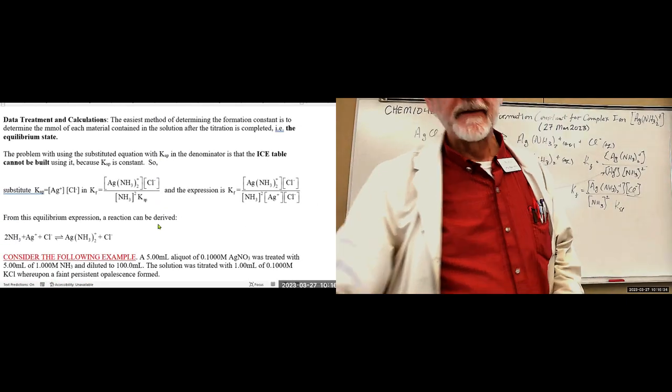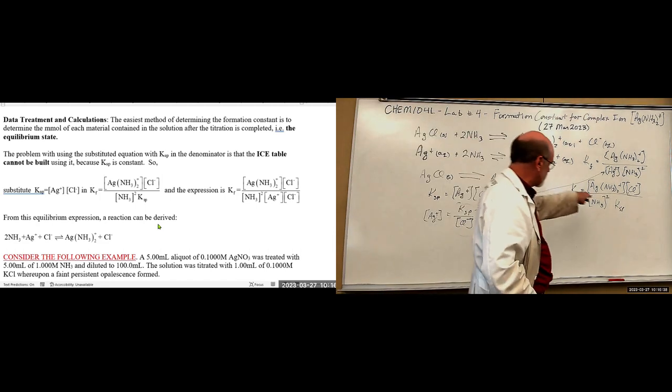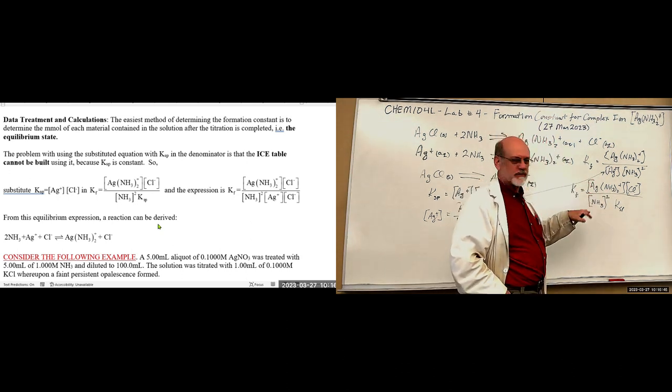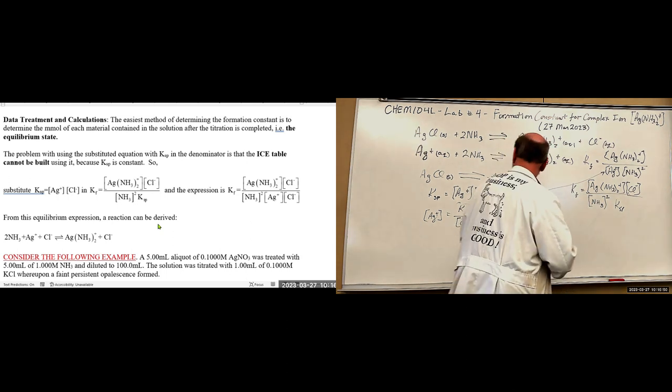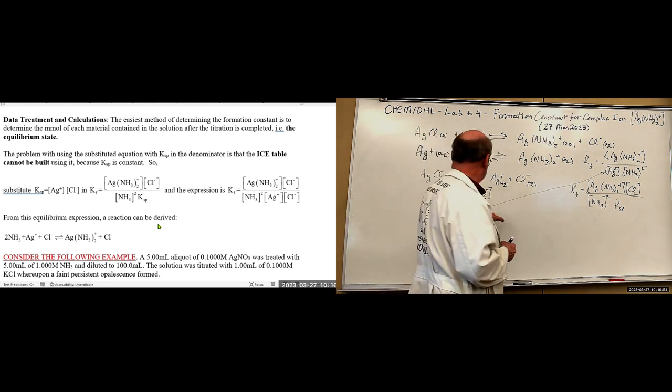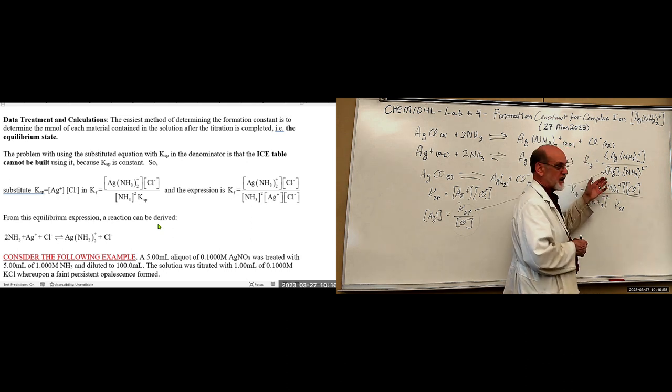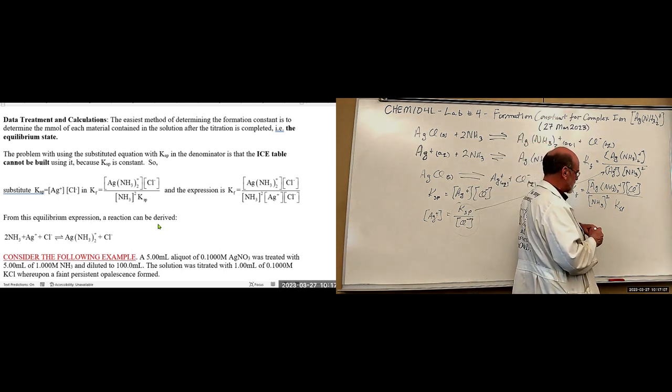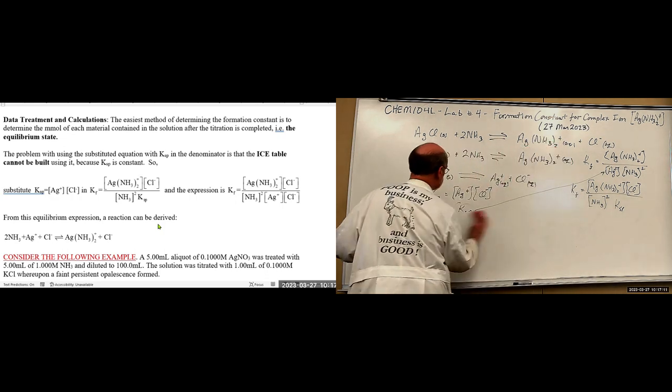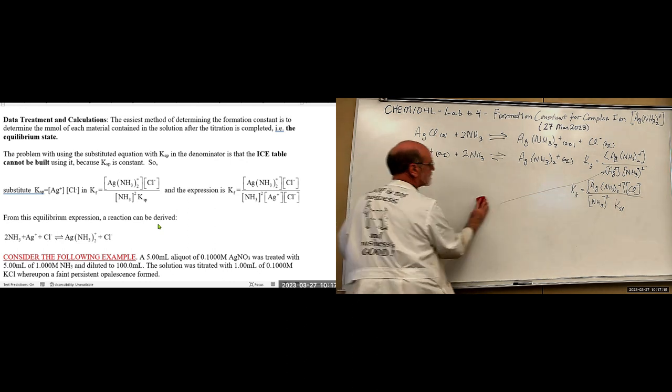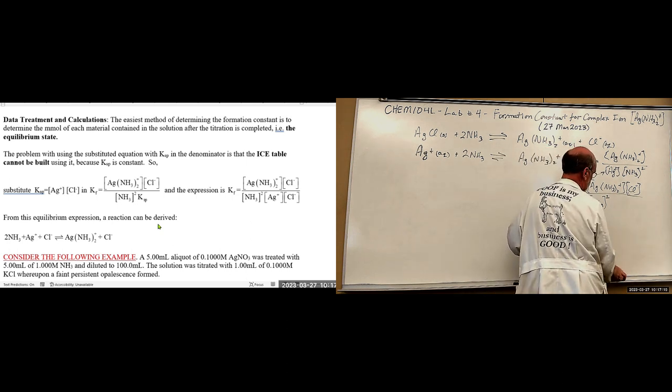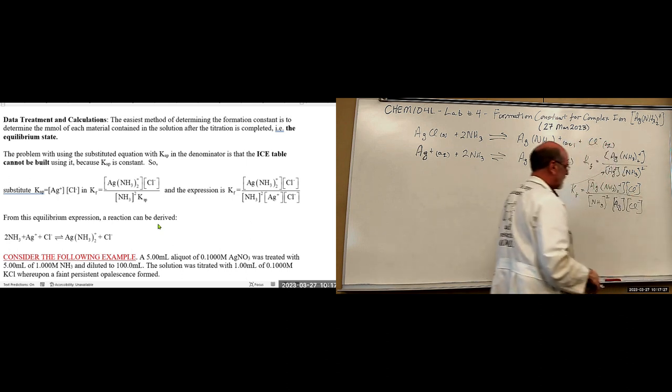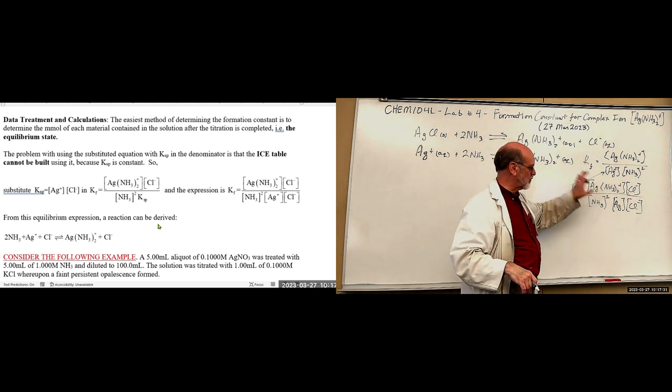Data treatment. The problem with this expression is it's difficult to create an ICE table from this one. So what we have to do is go back in and say because silver ions are not here anymore. But they were originally in the concoction before we made it up. So we're going to substitute for Ksp. If we substitute for Ksp what it's equal to, now we get silver ions and chloride. So now we're going to reconstruct an ICE table based upon this.